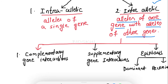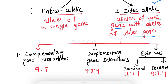This is the introduction to what gene interaction means and how it differs from Mendelian laws of inheritance. In gene interaction, there is a deviation from the dihybrid cross ratio of 9:3:3:1. In complementary gene interaction the ratio is 9:7; in supplementary gene interaction it is 9:3:4; in dominant epistasis it is 12:3:1; and in recessive epistasis the ratio is 9:3:4.